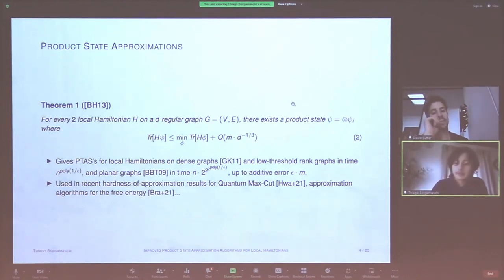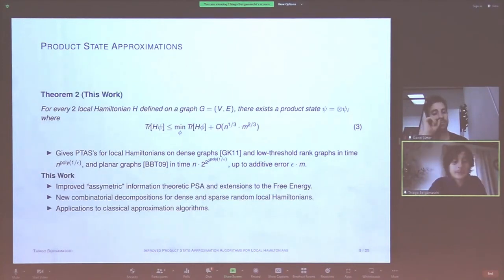And what we'll try to discuss the main contribution in this work is kind of threefold. The first are improved product state approximations and extensions to these statements by Brandao and Harrow to the free energy. The second are new combinatorial decompositions for local Hamiltonians. And the third are applications of the previous two to develop approximation schemes. And in the interest of time, I'll try to focus on the latter two points in this talk although I do think the information theoretic results are interesting in their own way.